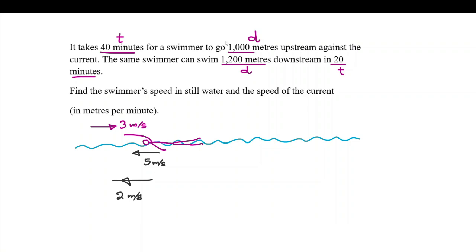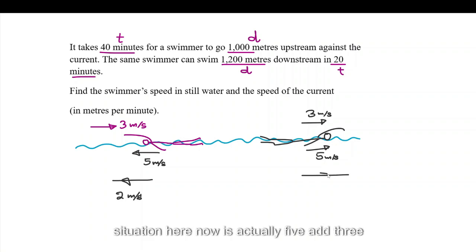So, you need to take them away. Now, let's say if the swimmer turn around and starts swimming downstream. Now, it's the same swimmer. This swimmer can now go at 5 meters per second, like before. The stream is helping now. The stream is actually taking the swimmer with it. So, the overall situation here now is actually 5 add 3, 8 meters per second.